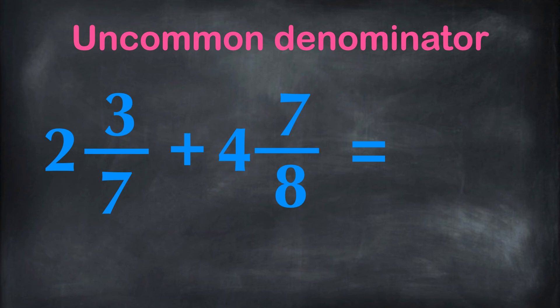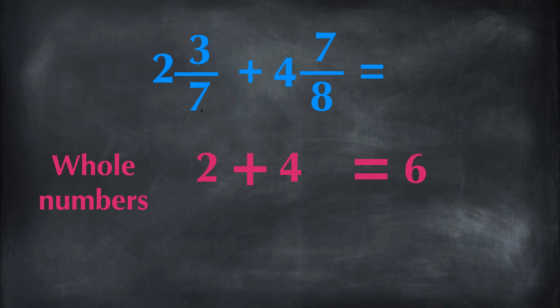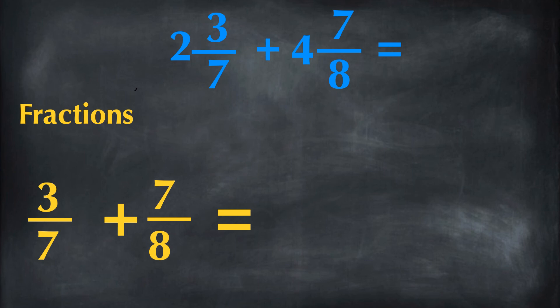Here we have 2 and 3 sevenths being added with 4 and 7 eighths. The denominators are not the same. First we can add the whole numbers together. We have 2 and 4 in the whole numbers. 2 plus 4 is 6. Then we need to add the fractions. Since the denominators are different, we need to make the denominators the same. The LCD of 7 and 8 is 56.